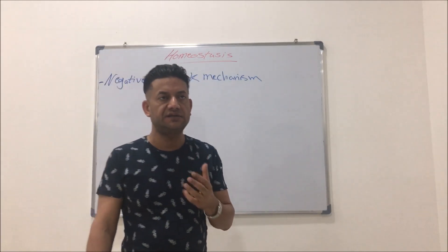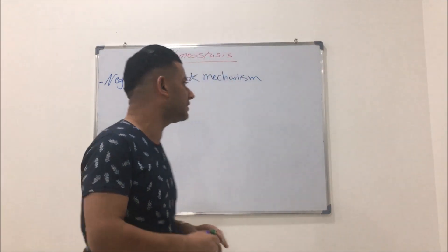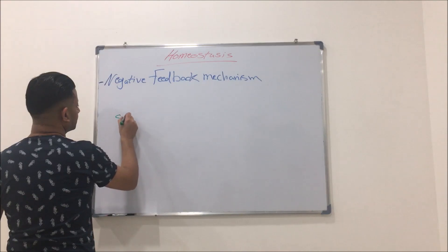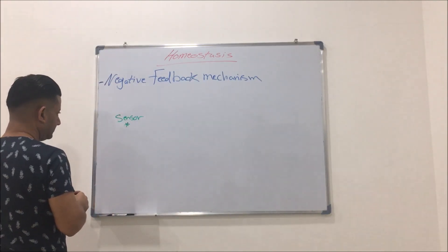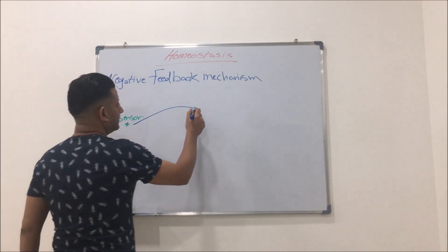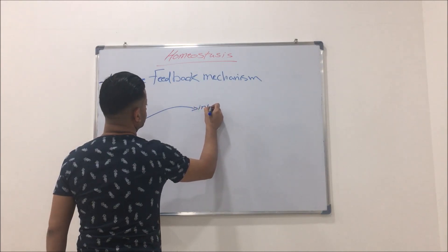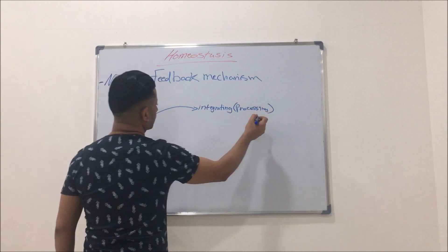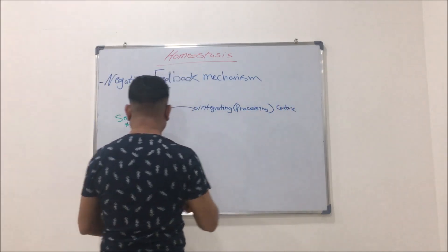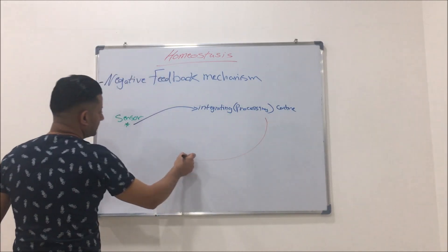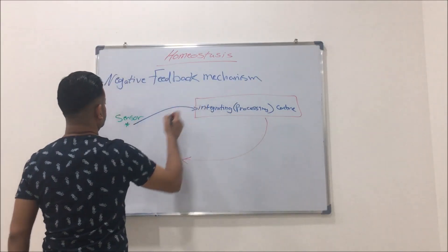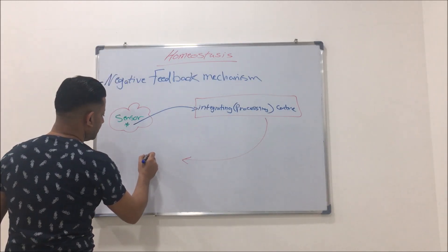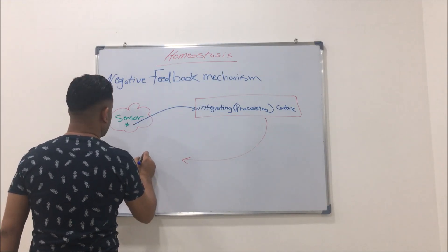To understand the negative feedback mechanism, we have to recall in our minds that we need, in general, a sensor, an integrating center or processing center, and we need also the effector.